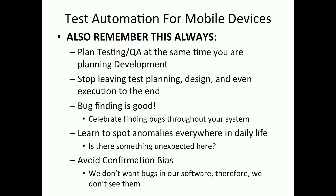How to start? Informally, learn to spot anomalies everywhere in daily life. What is wrong? Look around right now — is there something unexpected? Go outside and see what's unexpected. And avoid confirmation bias — often people don't see bugs in what they develop because they don't want to see what's wrong. We don't want to see problems with what we develop. But you can get around that by looking for problems. Look for bugs — they're always there.